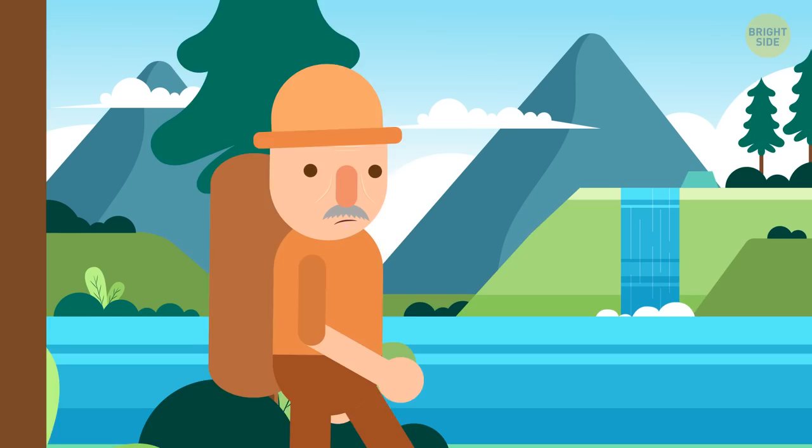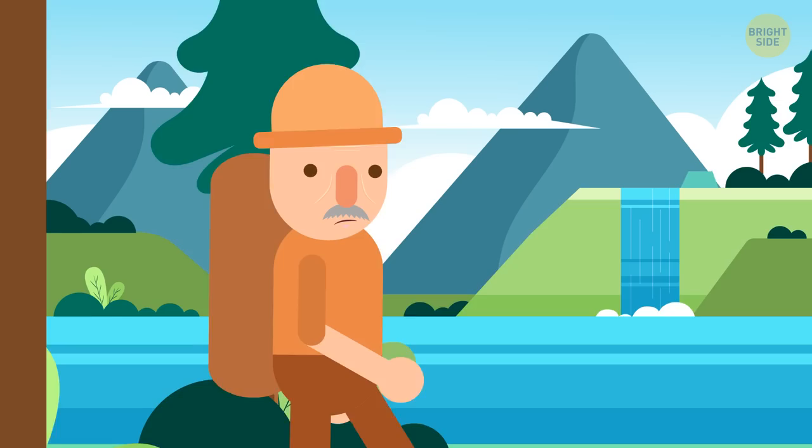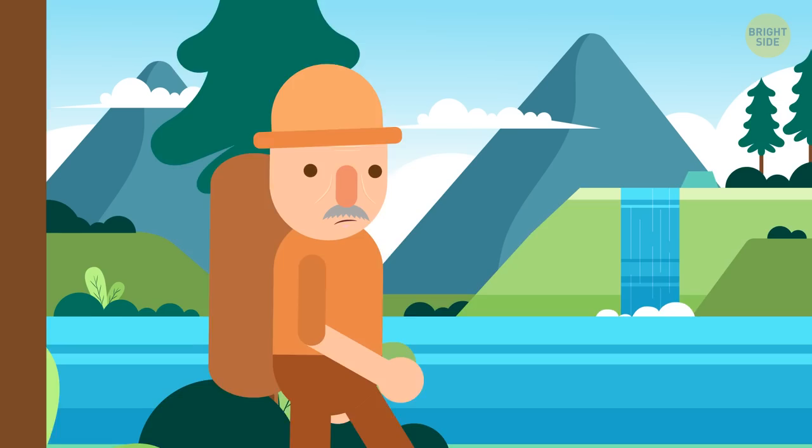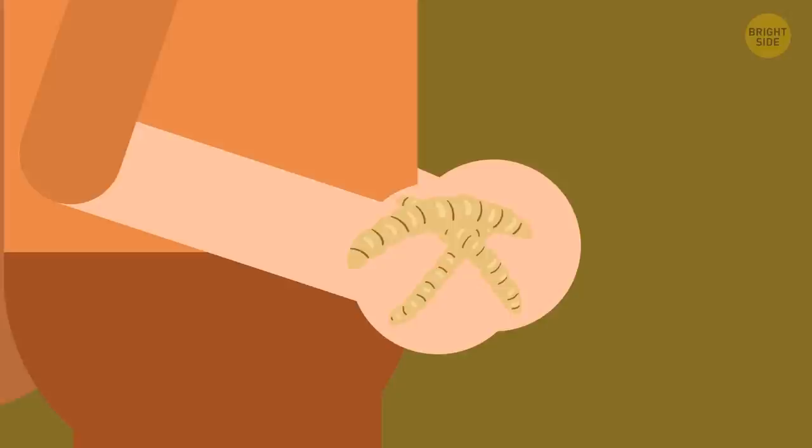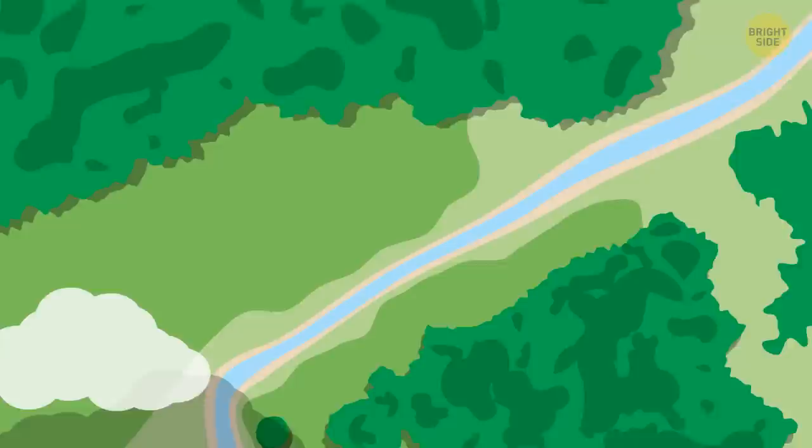Hours pass, and your belly grumbles. You look around for tasty snacks. There are berries and mushrooms, but you don't recognize them. So it's better not to eat something if you're unsure whether it's poisonous. You search under old logs and branches for bugs. You've found some mealworms that can be eaten raw. Some insects, when cooked, can be a major source of iron protein and vitamin B12. You look at them, and your appetite goes away. Maybe later.